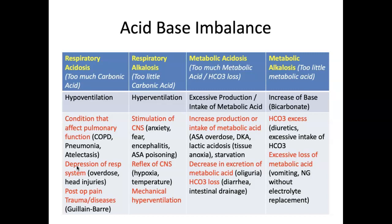Thoracic trauma — such as a flail chest from a motor vehicle accident or gunshot wound — can also cause respiratory acidosis. Respiratory alkalosis involves too little carbonic acid, from stimulation of the central nervous system causing hyperventilation: anxiety, fear, encephalitis, meningitis, or ASA poisoning, which causes the body to hyperventilate to get rid of acid. A reflex CNS mechanism — such as hypoxia in congestive heart failure or respiratory infection — can also stimulate hyperventilation as a compensatory mechanism. Mechanical hyperventilation, or over-breathing with a ventilator, is another cause.